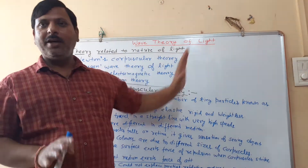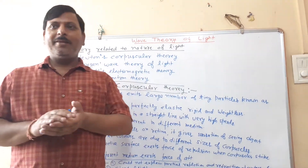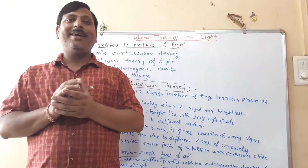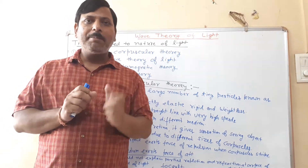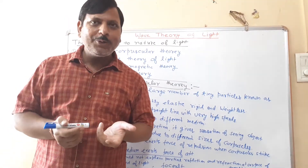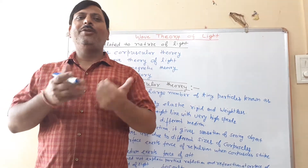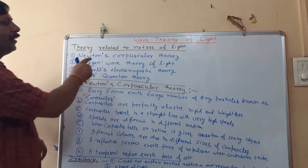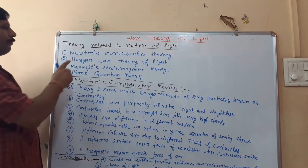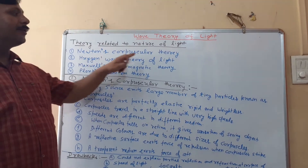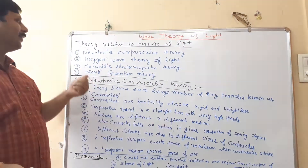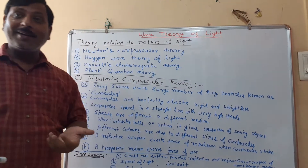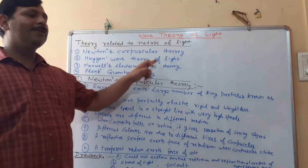First, scientists assumed that light has a particle nature. We have a few scientists who changed ideas about particle nature and wave nature. One important theory is Huygens' wave theory of light.